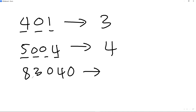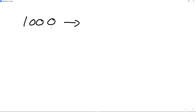Now here we have to be careful. The rule for significant figures says only if the zero is between two non-zero numbers is it significant. So if I've got 83040, the zero at the end of the number is not significant — that gives us four significant figures. Similarly, 1000 gives one significant figure, and 900 also gives one significant figure.